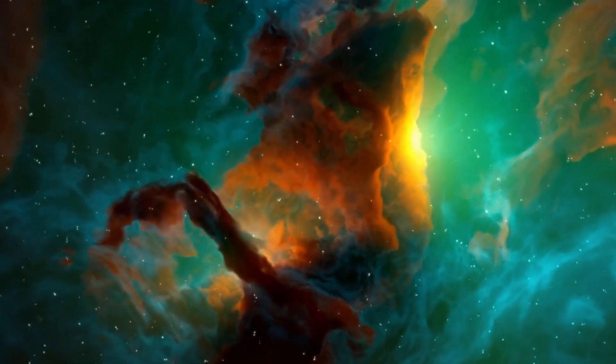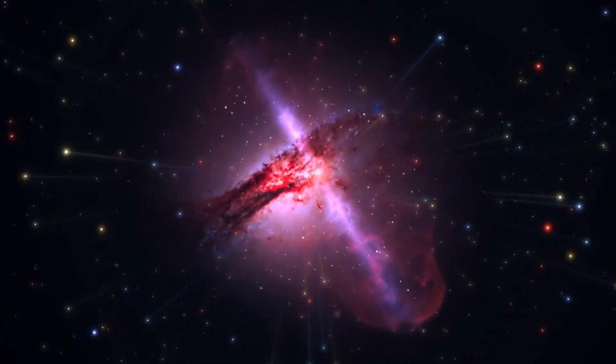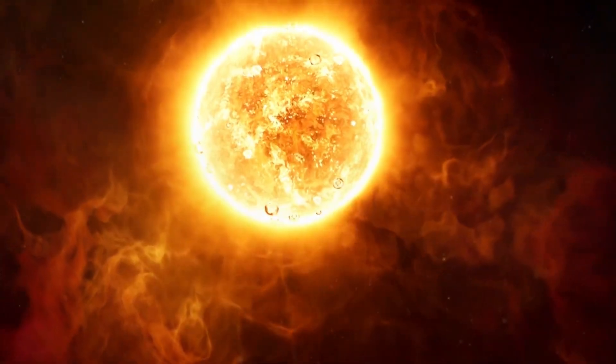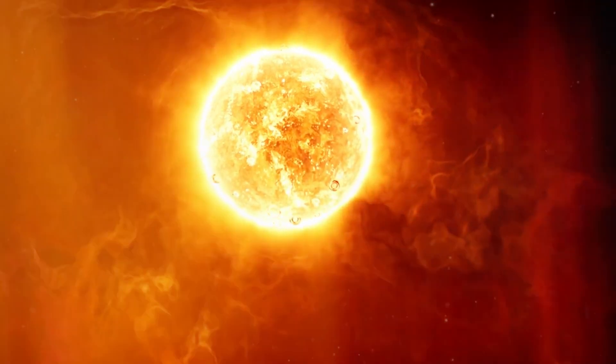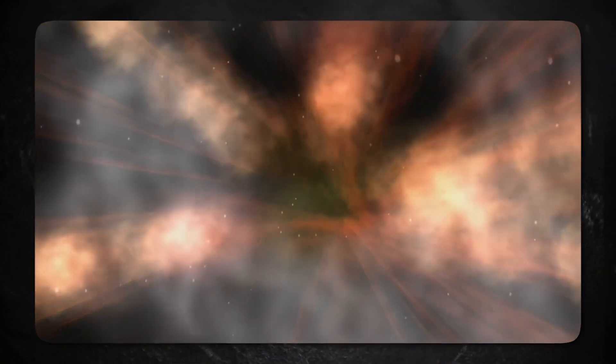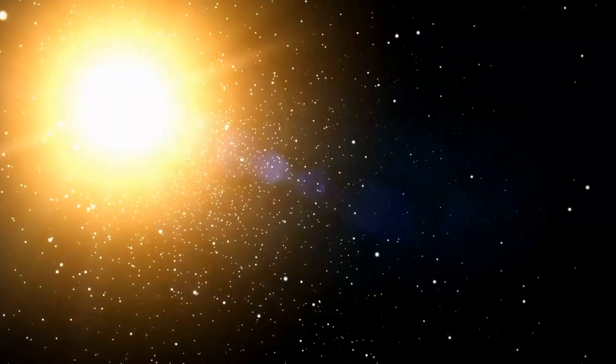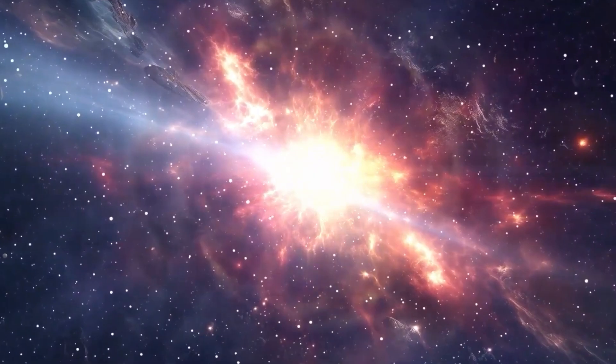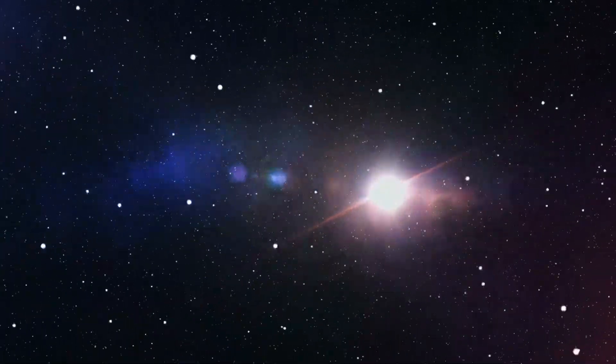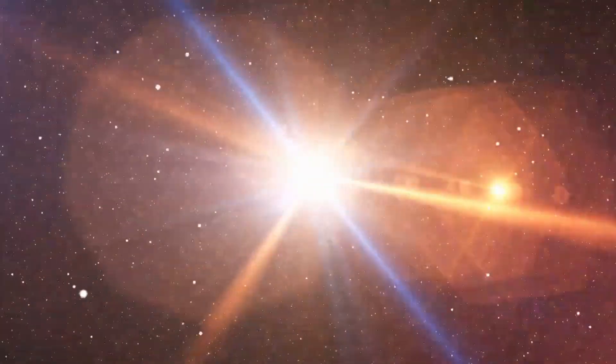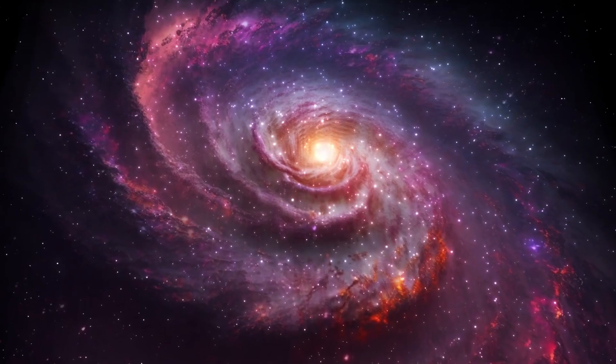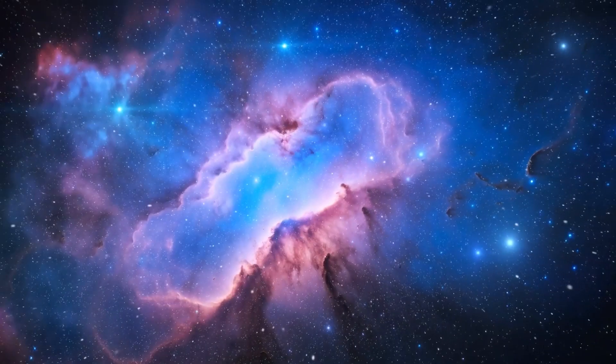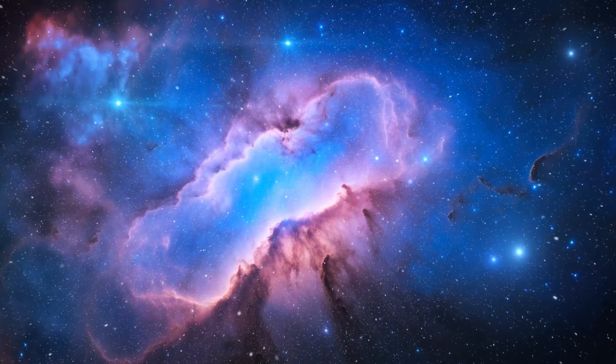Supernovae are some of the most powerful and explosive events in the universe because they give off huge amounts of energy. There are two main types, type 1 and type 2. Type 1 supernova happen when a white dwarf, which is the dense leftover matter of a low mass star, absorbs matter from a companion star until it hits a critical mass. This causes nuclear fusion to go off the rails, which blows up the star. This blast is terrible, but it's not as strong as a type 2 supernova.